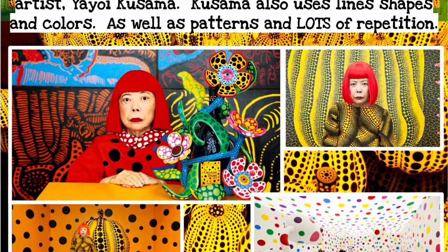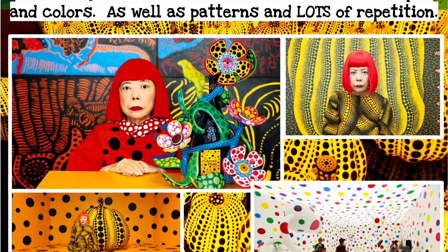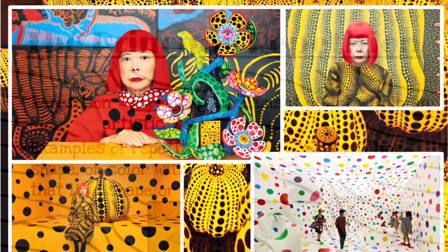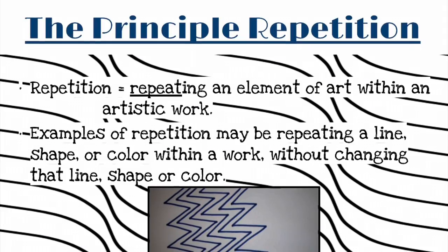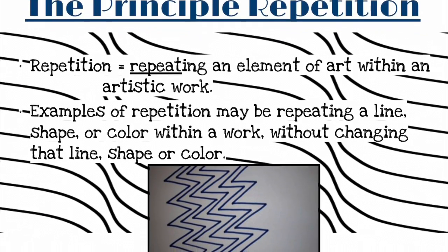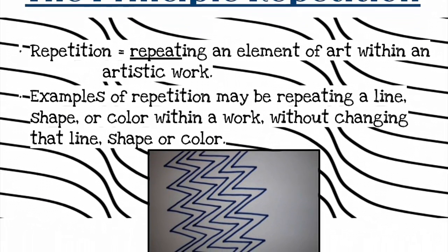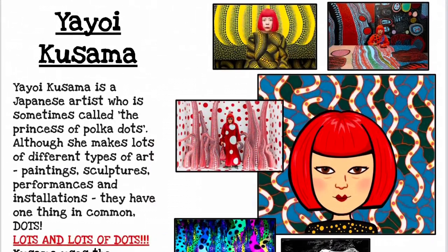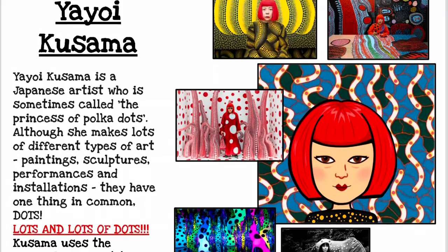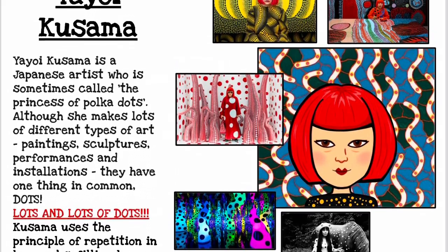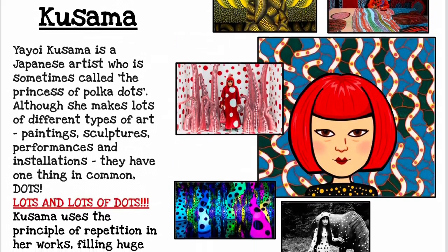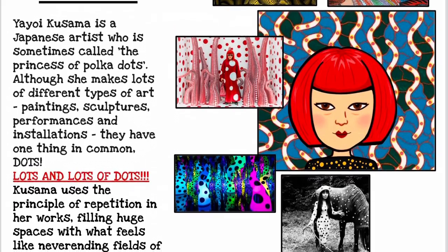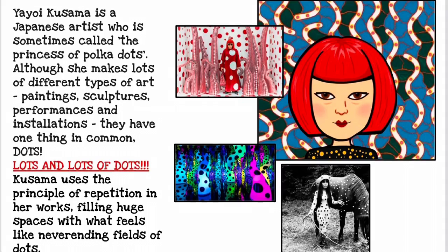Now we are going to start talking about the artist Yayoi Kusama. She also does a lot of patterns in her work, but she mainly focuses on repetition. Repetition is when you're repeating an element of art in an artwork — you might repeat a line, a shape, or a color over and over again. Yayoi Kusama is a Japanese artist who is sometimes called the princess of polka dots, because most of her artworks are full of lots and lots of dots.